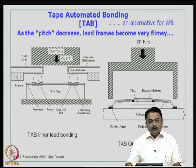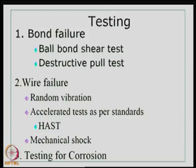So today we will end here. We have covered all the basic first level interconnection choices in detail. In wire bonding, we have also seen the complete process flow. The next class we will start with the process flow for TAB and the flip chip. Thank you.